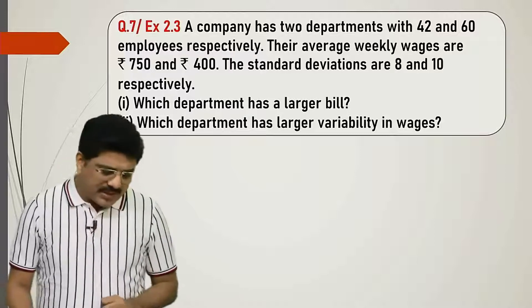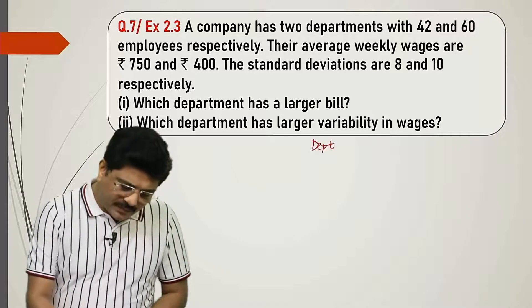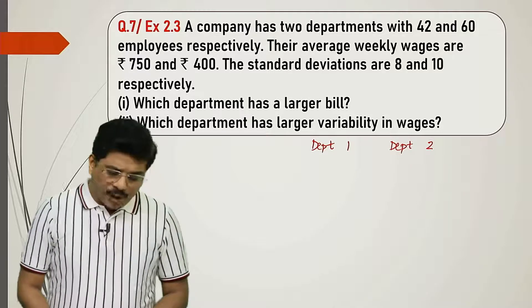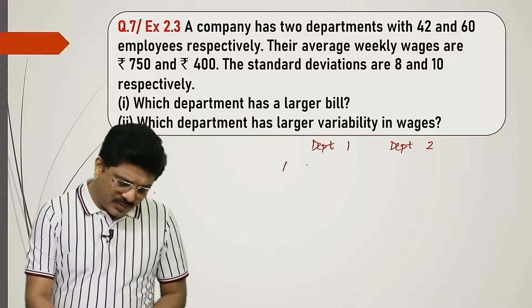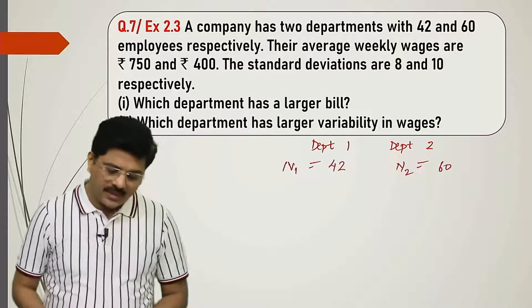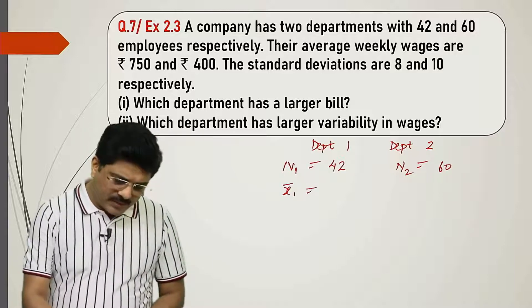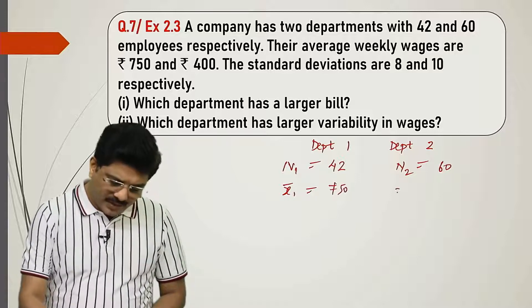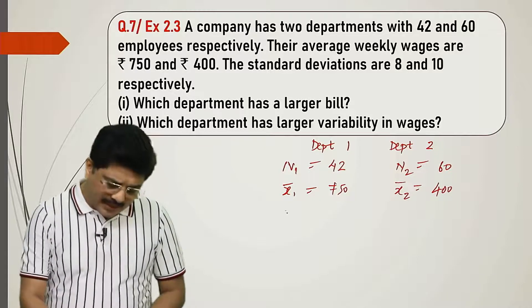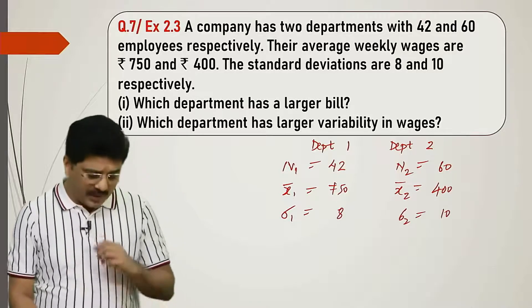Similar question: question 7. A company has two departments, department 1 and department 2, with 42 and 60 employees respectively. So N1 is 42, N2 is 60. The average weekly wages are: X1 bar is 750, X2 bar is 400. Standard deviations are 8 and 10. Standard deviation of 1 is 8, standard deviation of 2 is 10.